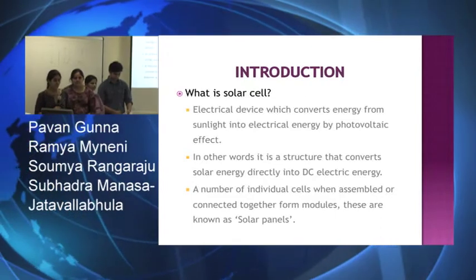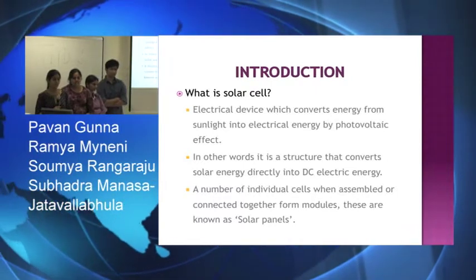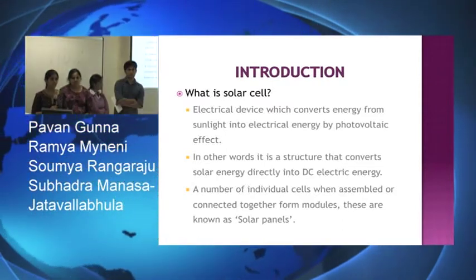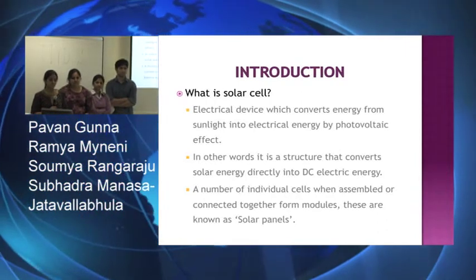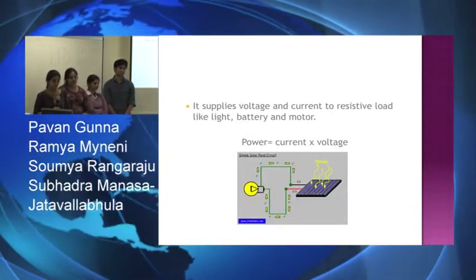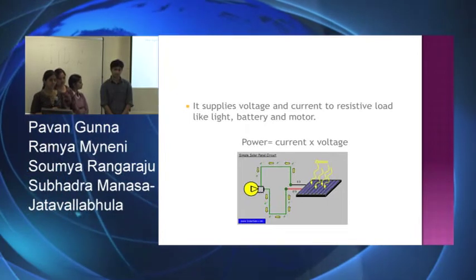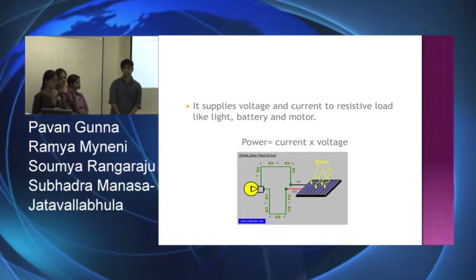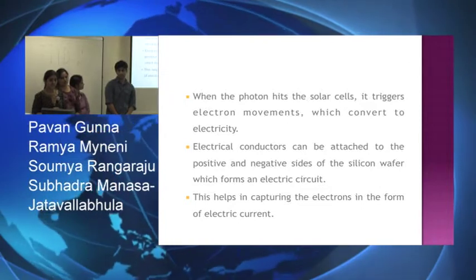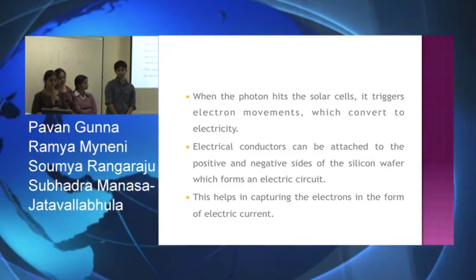In other words, it's a device which converts the photons into electron movement and converts that into electrical current. A number of individual cells when assembled and connected together forms a solar panel. Here's the solar cell or solar panel which has positive and negative ends and it is connected to a lamp, and you can see the flow of electrons. The basic operation is when the photon hits the solar cells, it triggers the electron movements and this converts into electrical energy.